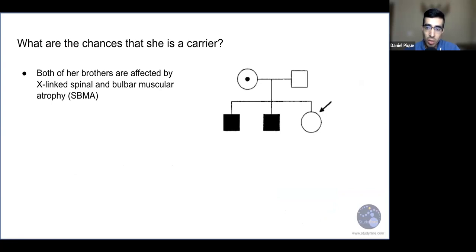So we'll start off with a question. Let's say we have a patient indicated here by the arrow, and both of her brothers are affected by X-linked spinal and bulbar muscular atrophy or SBMA. The question would be, what are the chances that this individual, this woman, is a carrier? So take a second to think about that.